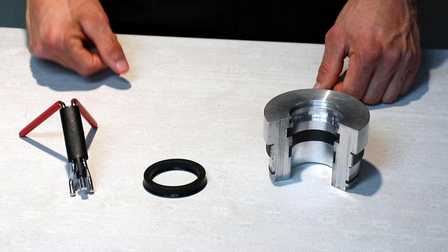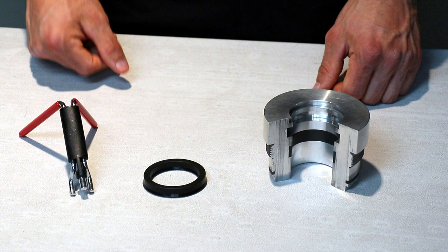First, select the tool that fits your needs. Today we'll be installing a loaded U cup with a 1/4 inch cross section and 1.875 inch ID with the medium size tool.